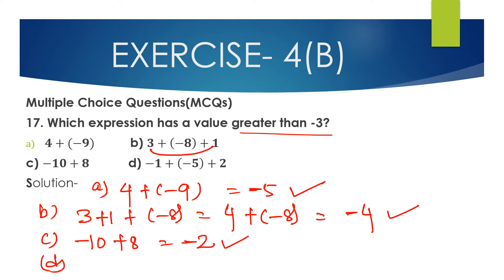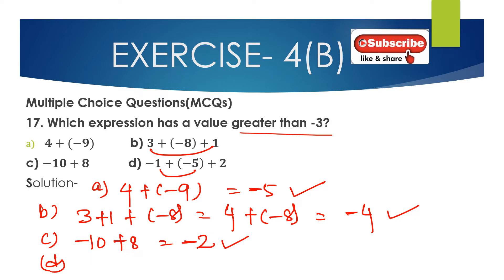Option D: minus 1 plus minus 5 plus 2. First, add the two negative integers: 1 plus 5 equals 6, and place the negative sign — minus 6. Then minus 6 plus 2: subtract 2 from 6 to get 4, and place the sign of the bigger integer — 6 is negative — so the answer is minus 4.